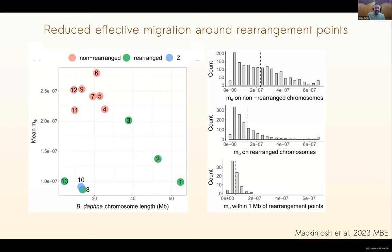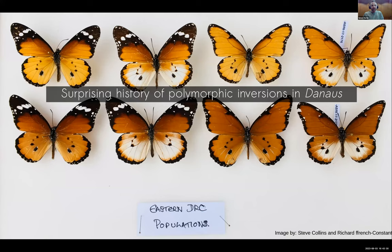I'll leave that part of the story and move on for the last 10 minutes or so to the third part, which is about inversions that are polymorphic in the genus Danaeus. These butterflies might look more familiar to those of you in South Africa. This is not a group where there's been rapid speciation - in fact this whole story is about just one species, but it's a species with quite a lot of phenotypic diversity associated with smaller chromosome rearrangements.